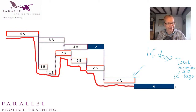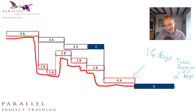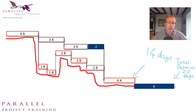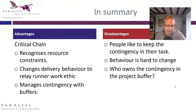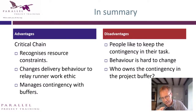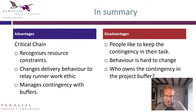So that's the theory — but there are a load of problems, which is why I don't think it's taken off. It's a niche interest — some people think it's fantastic, and I used it in my last company and it worked really well. The advantages are: you recognize resource constraints, you get the relay runner work ethic, and strategic float — you can apply that to any project, critical chain or not. You need a bit of float at the end that you own.